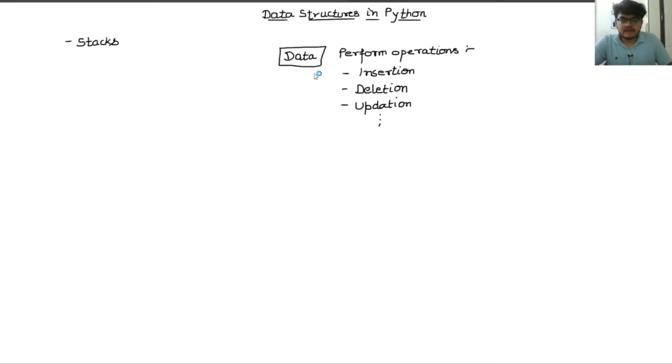One important thing about data is that data can be in a raw format. In order to process raw data, it is very difficult. So what we do is we actually make some structures, and these structures help us in performing these operations in the most effective way.